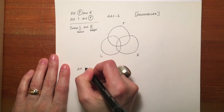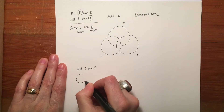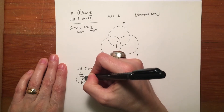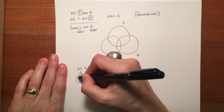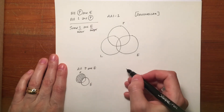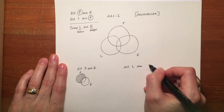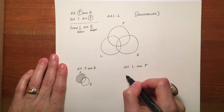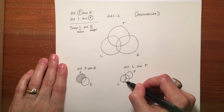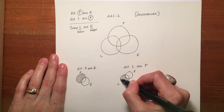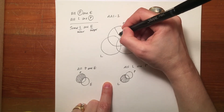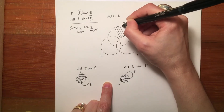For 'All P are E,' all members of P are to be shaded out except for those that are also members of E, because all members of P are E — I'm shading out what's unimportant and leaving blank what is. Working with the P and E circles in the larger diagram, I'm going to ignore the L circle and shade right over it.